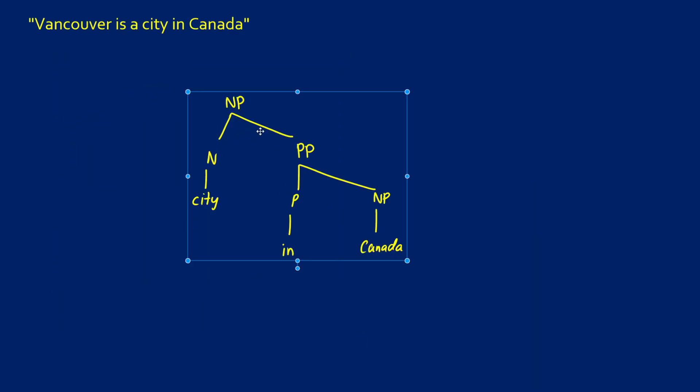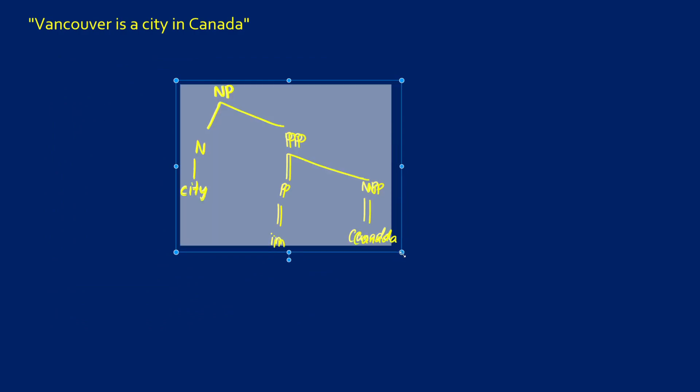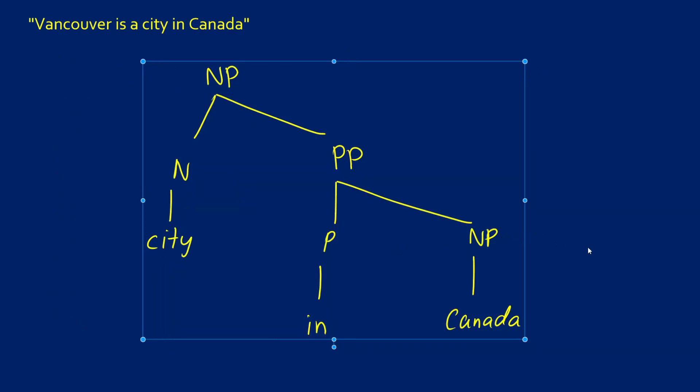So I'm going to take this out, place that, and we're just going to focus on this bit right here, city in Canada. So city is going to be type ET, Canada is going to be type E. And in, let's get the translation for in.